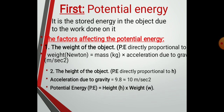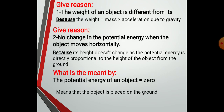Potential energy equals height times weight. The measuring unit of potential energy is joule, height is meter, and the measuring unit of weight is Newton. Give reason: the weight of an object is different from its mass, because the object's weight equals the object's mass times the acceleration due to gravity.